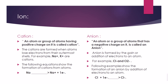A cation is a part of an element that exists in ionic compounds. Cations are atoms or a group of atoms having a positive charge. Cations are formed when an atom loses electrons from its outermost shell — also called the valence shell. For example, hydrogen has a single electron; when it loses that electron, it becomes H⁺, a cation.